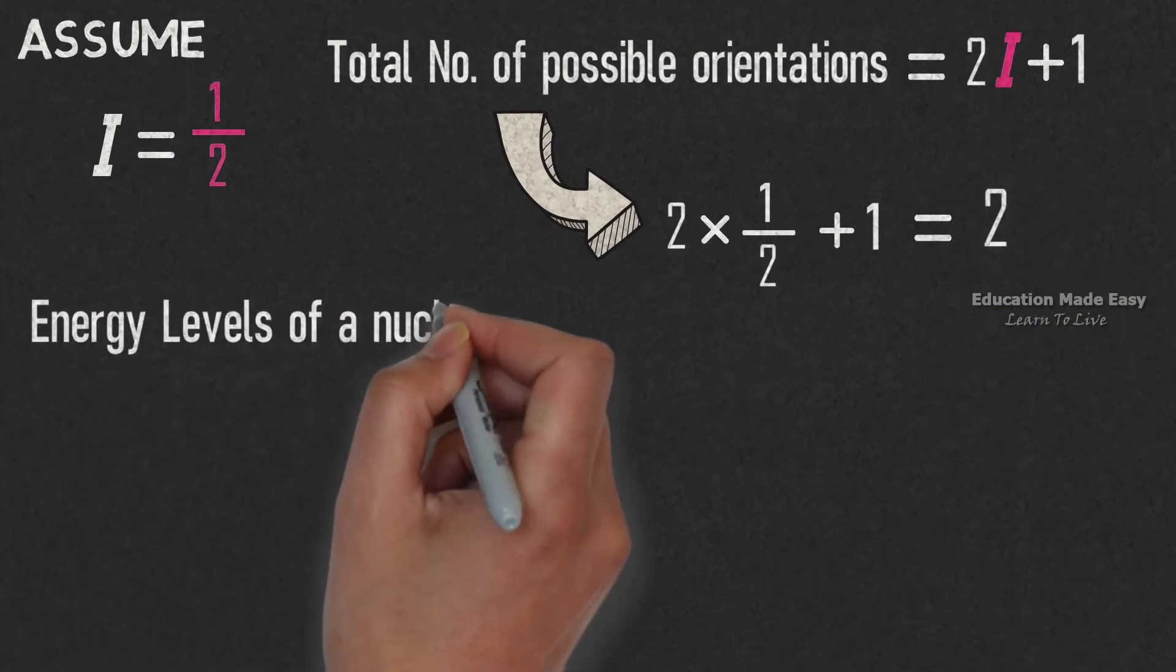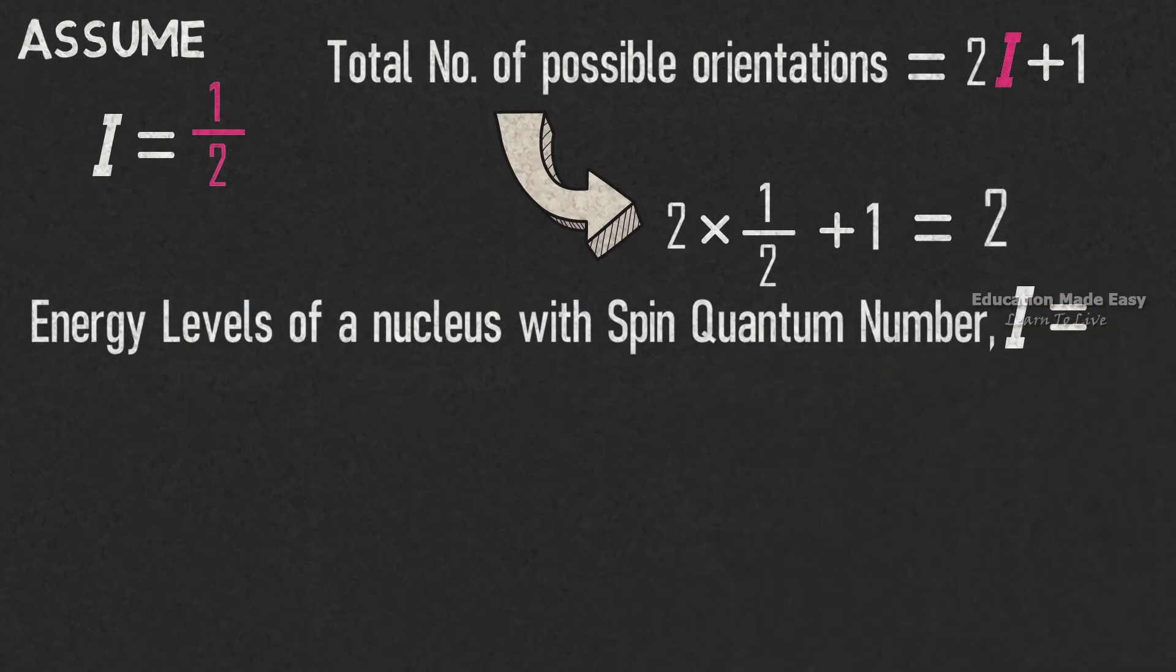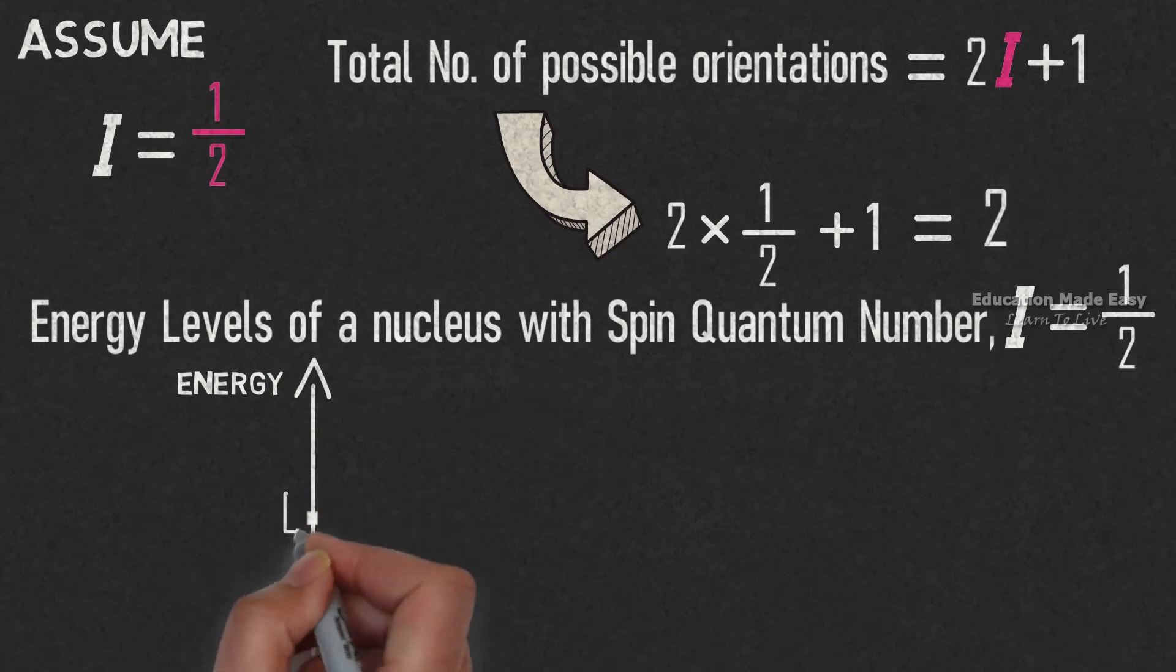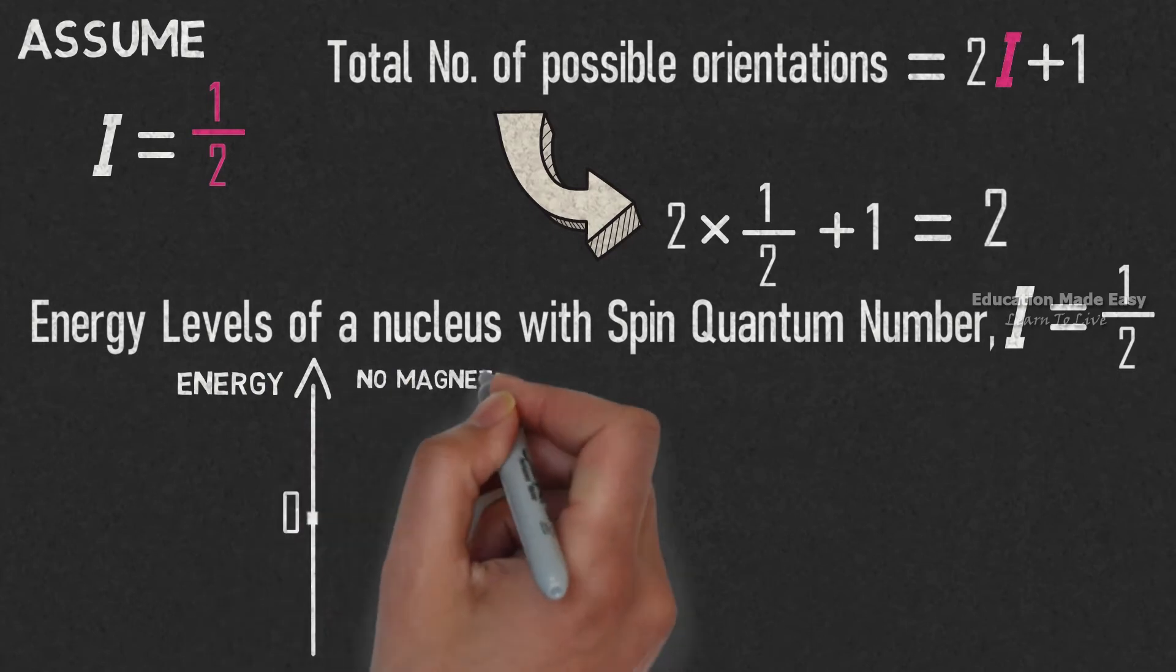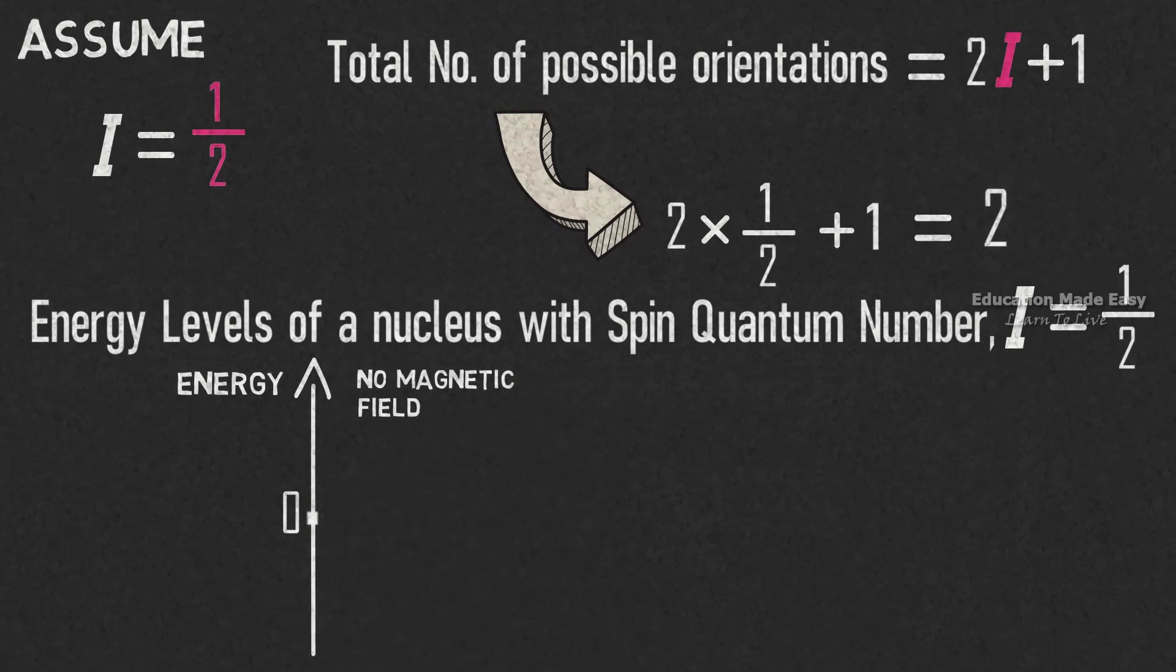Let us draw the energy levels of a nucleus with spin quantum number I equal to 1/2. Energy is drawn on the y-axis. On the x-axis, let us represent orientations. When there is no magnetic field applied, the energy level of both orientations are the same.